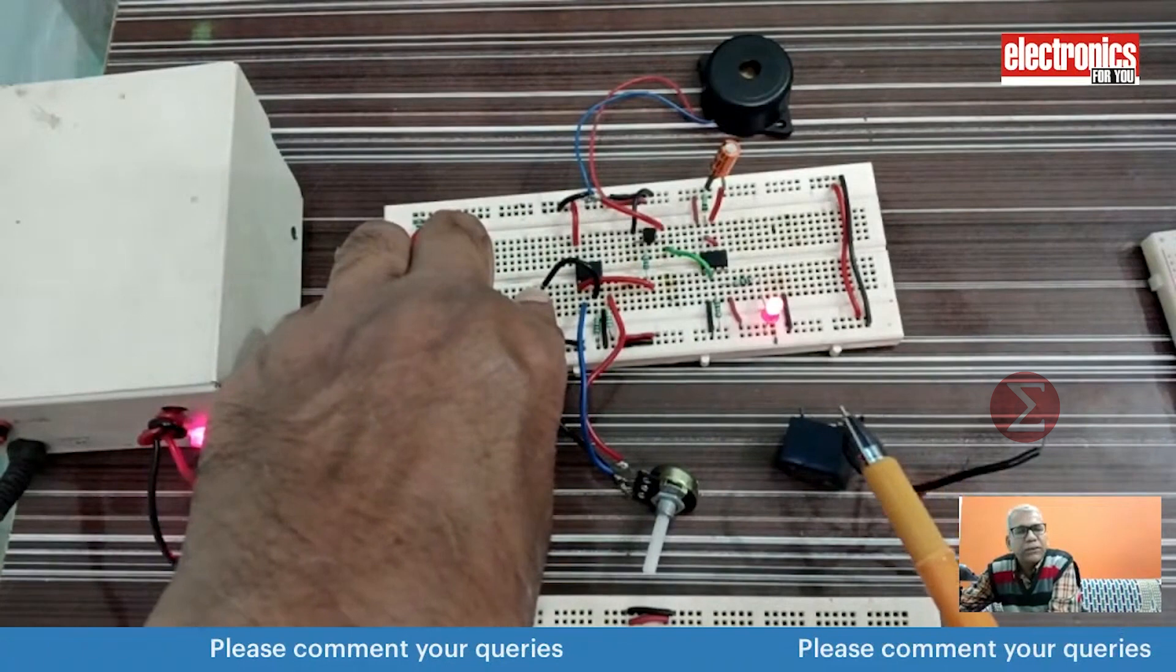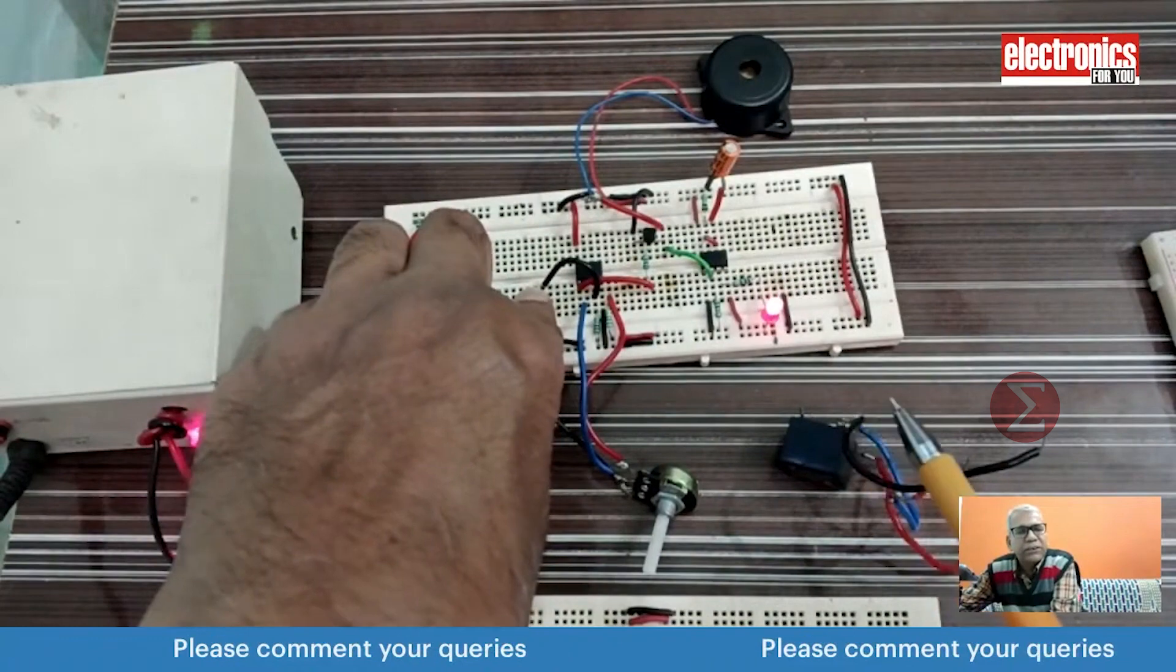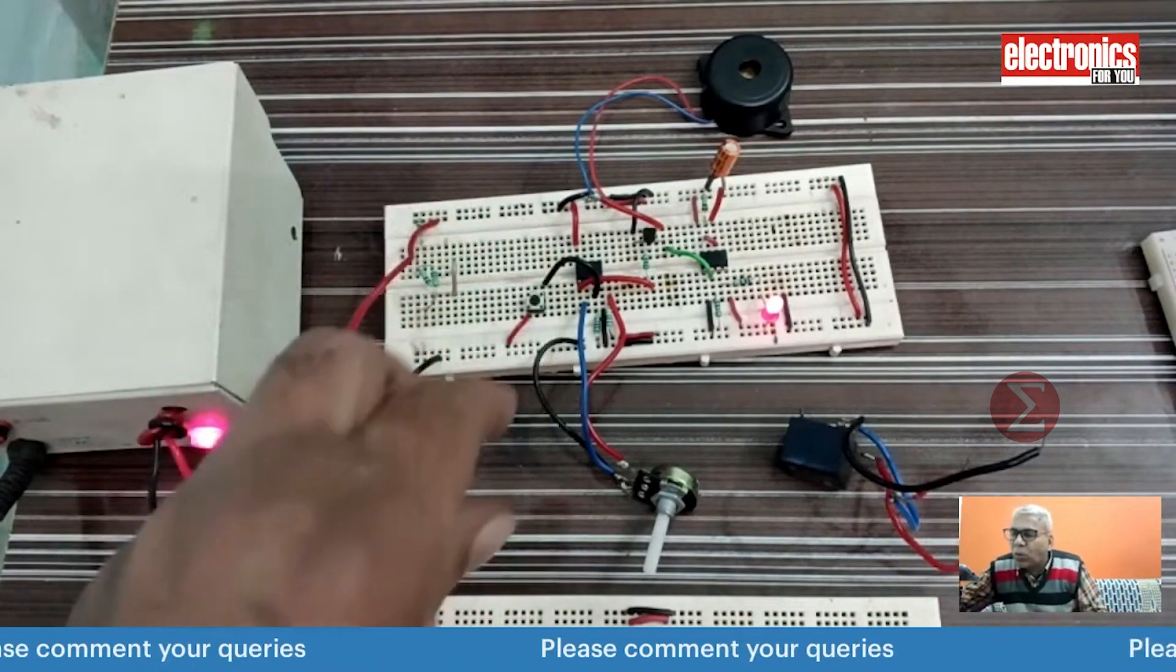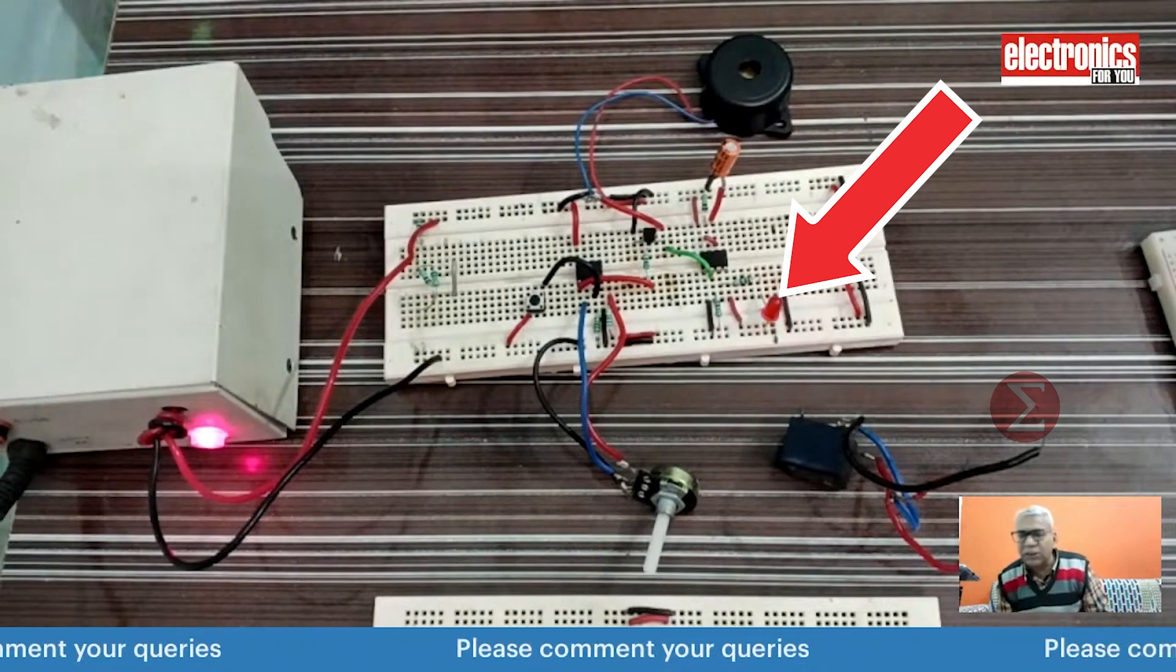You can see the buzzer is blowing and the LED is glowing, representing the exhaust. When you release the button, the buzzer will stop blowing and the exhaust will also turn off after a specific time. The time is decided by this 555 timer IC.